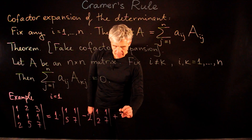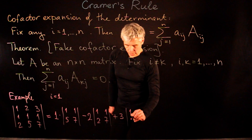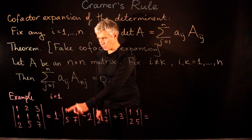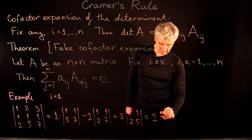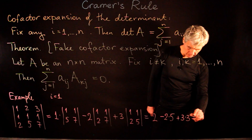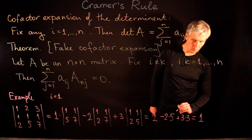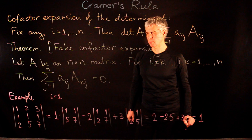And then plus 3 times the determinant obtained by removing the first row and the last column, which is [1,1; 2,5]. Evaluating: the first determinant is 7 minus 5 = 2; the second is 7 minus 2 = 5, so minus 2 times 5; and the last is 5 minus 2 = 3, so plus 3 times 3. We get 2 minus 10 plus 9, which equals 1. So the determinant of this matrix is 1.